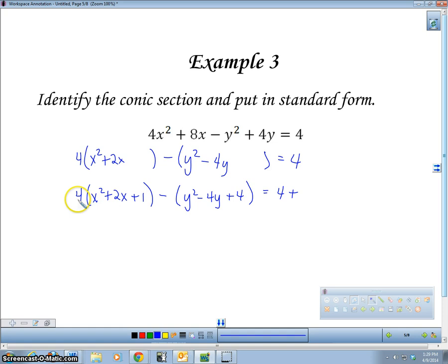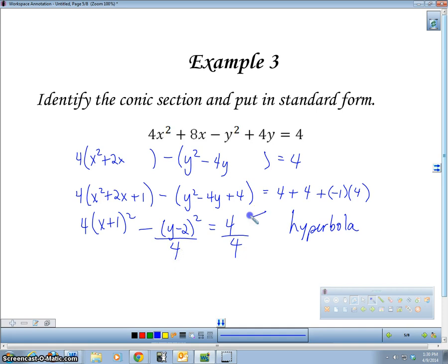I'm going to have 4. I'm going to add 4 times 1, and I'm going to add negative 1 times 4. 4x plus 1 squared minus y minus 2 squared equals 4. So this, since I have a minus here, this is a hyperbola. So we're going to divide by 4, because that's the number here. We want 1 there. So if 4 is going to cancel, I'm going to give me x plus 1 squared minus y minus 2 squared over 4 equals 1, and I've got my hyperbola.